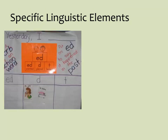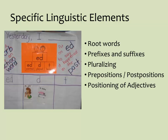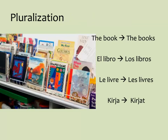When languages share similarities, cross-language transfer includes specific linguistic elements such as the meaning of root words — like 'photo' in 'photosynthesis' — and features of grammar and punctuation. Different languages use prefixes and suffixes in ways that are similar to and different from English. For instance, all languages have ways of indicating quantity and more than one. In English, most nouns are pluralized by adding S or ES, though there are exceptions. This may be similar to or different from how other languages indicate plurals. What easily transfers is the knowledge that each language has a way of showing more than one; what may be more difficult to transfer are the specific rules.